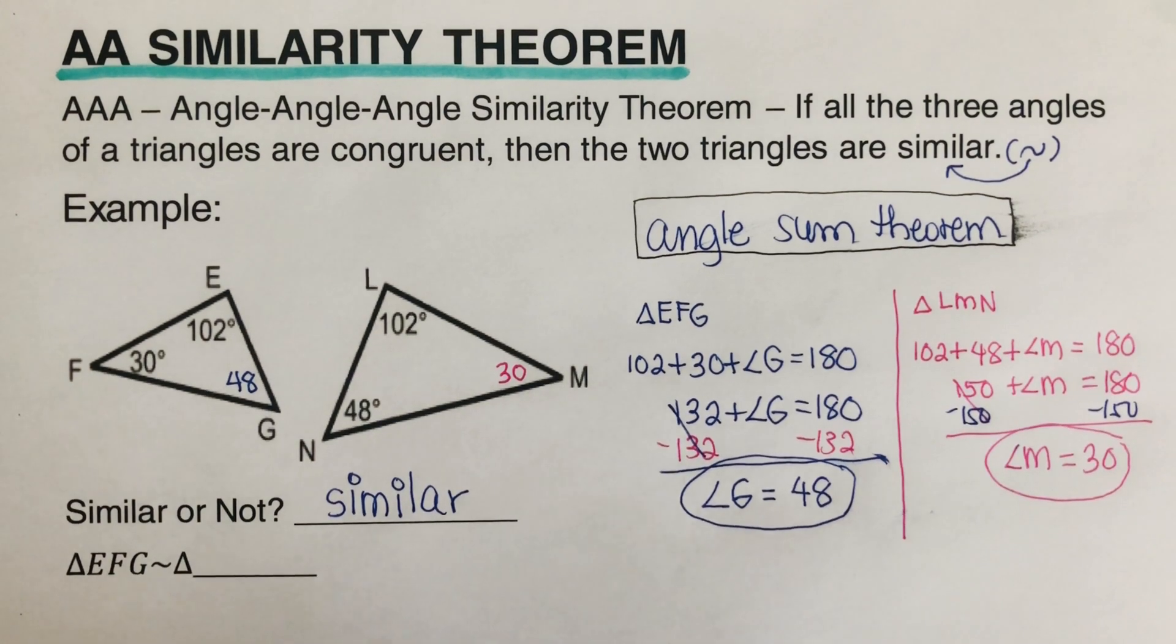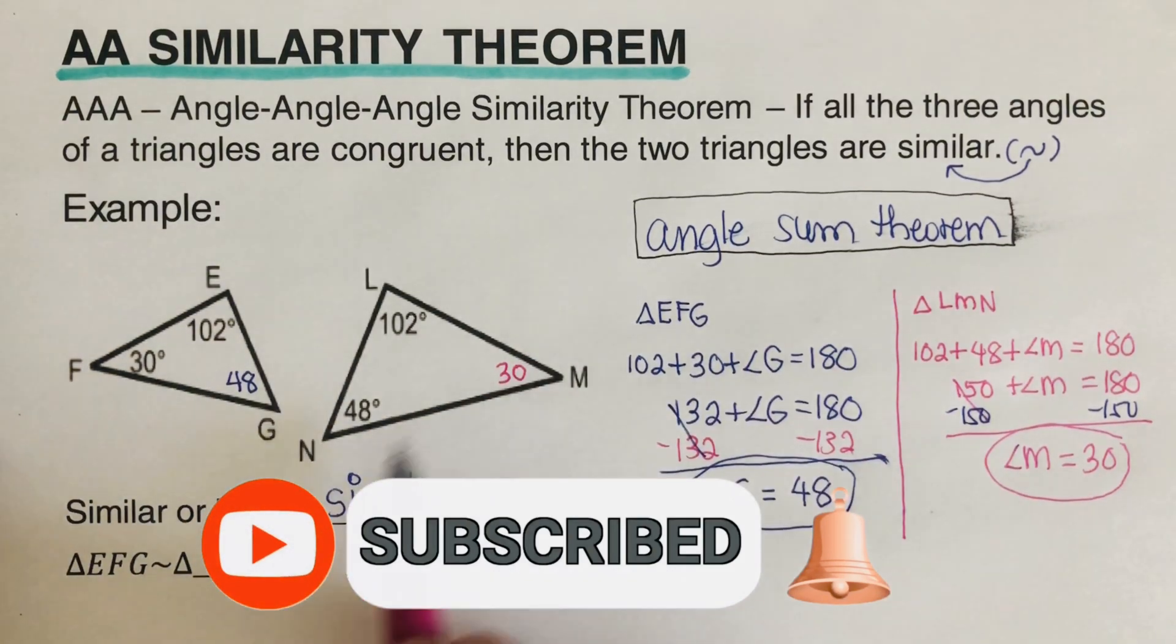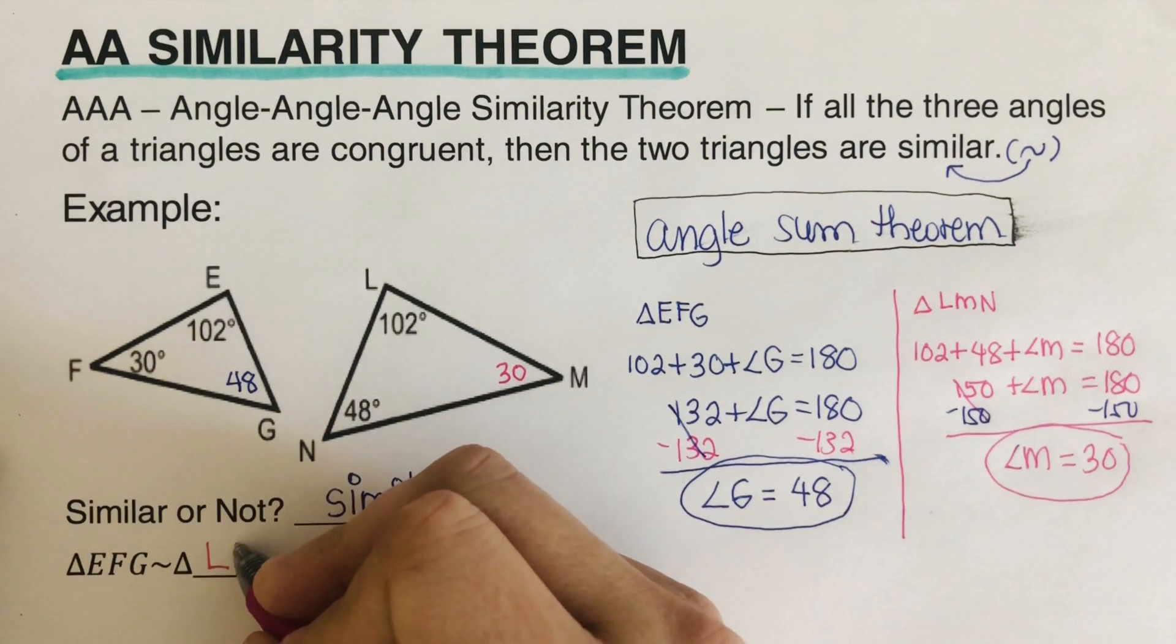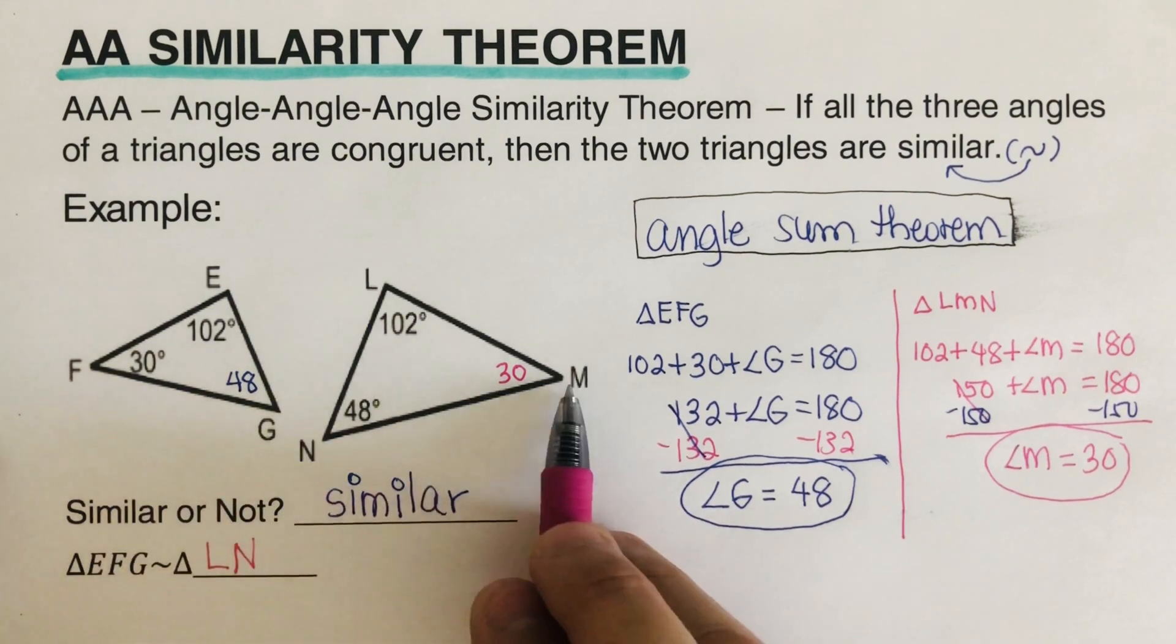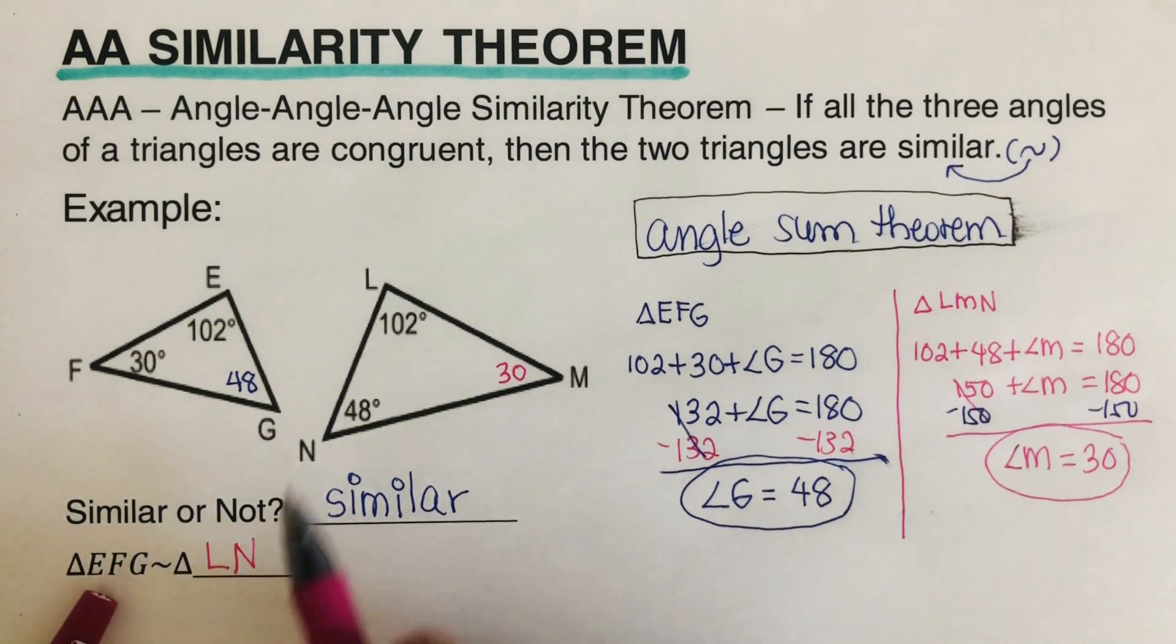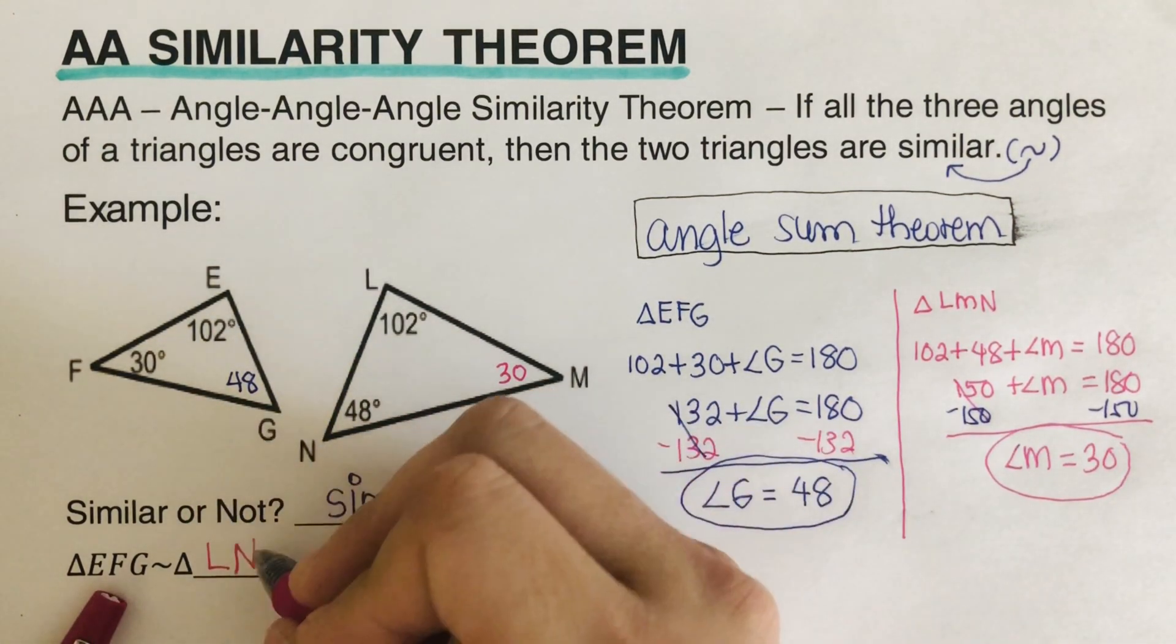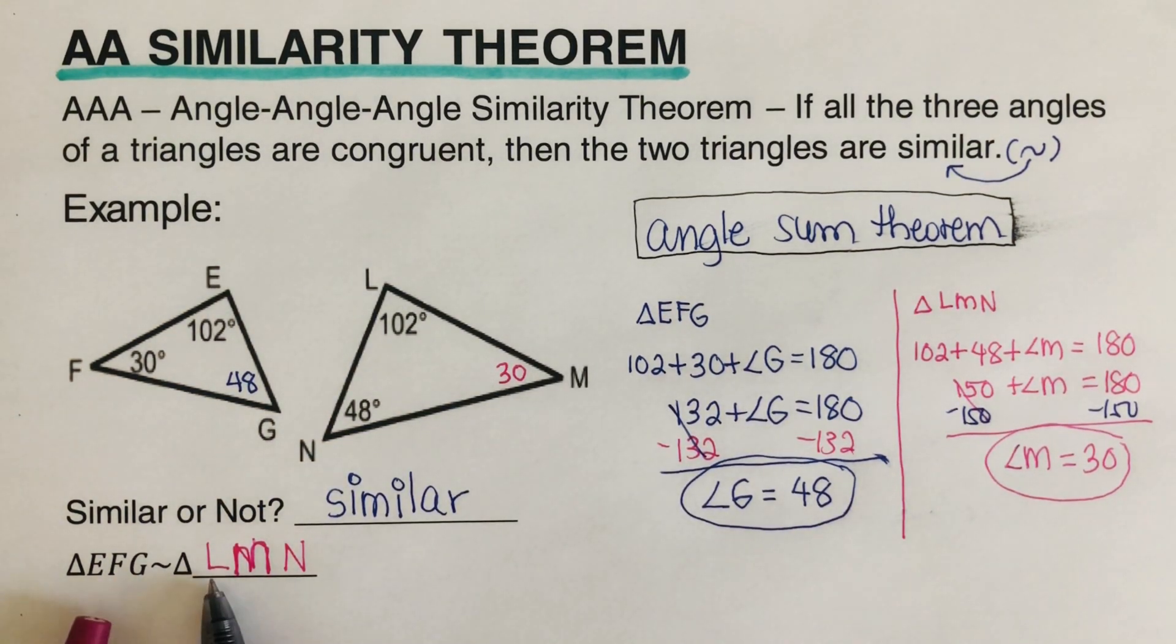So then from here we can go ahead and match up the sides. So E matches up with L. Both of them are 102. And then G matches up with M. No, G matches up with N. So this is LN. So because both of them are 48. And then F and M are, so hold on. So E matches with L. F matches with M. So this is supposed to be M. And then G matches with N. So be sure that we don't switch them around. So E and L, 102. F and M are 30. G and N are 48.